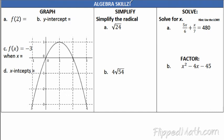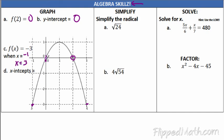Next part is the algebra skills. Reading a function in function notation: f(2) equals — that means you plug 2 into it — we're looking at zero. The y-intercept, where does it cross the y-axis? Also zero. f(x) equals negative 3 means the function equals negative 3. Where is the function negative 3? At x equals negative 1 and x equals positive 3. The x-intercepts are at x equals 0 and x equals 2.